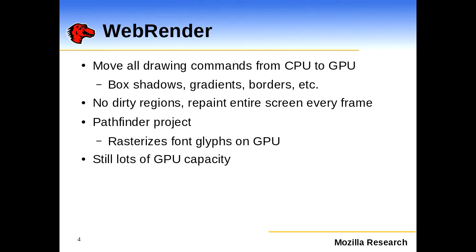For WebRender, the idea is to move all drawing commands from the CPU to the GPU — things like box shadows, gradients, and borders can all be done on the GPU efficiently. Processing that created rendered images on the CPU can then be done on the GPU. The Pathfinder project does font rendering on the GPU as well. Even doing all that extra work, WebRender still has excess GPU capacity — it can do full web page updates at up to 500 frames a second. We'd like to take advantage of that capacity and shift additional load from the CPU to the GPU.